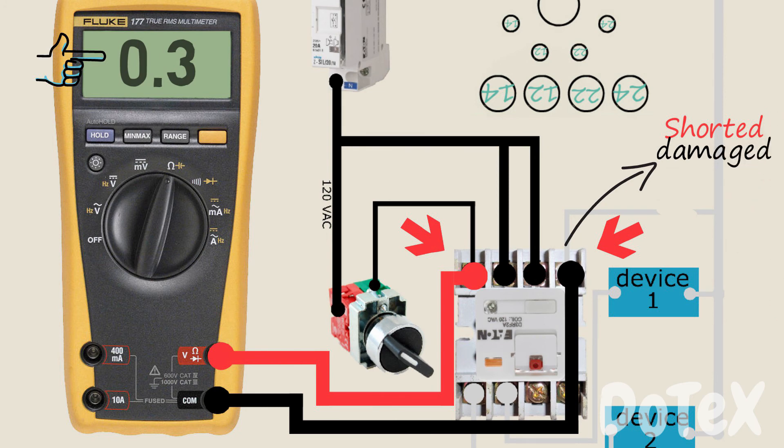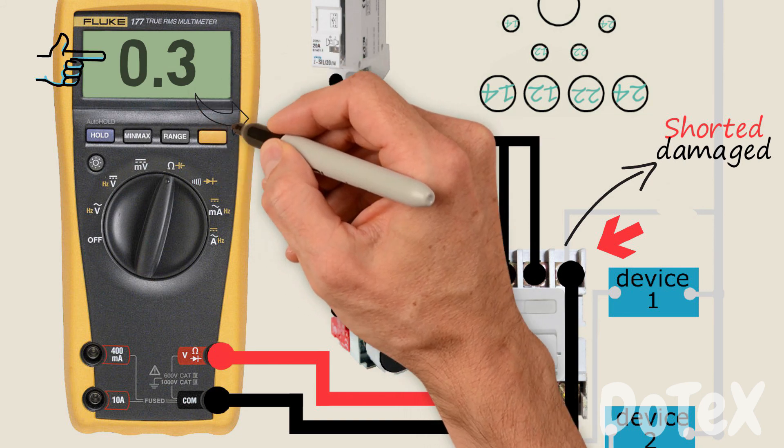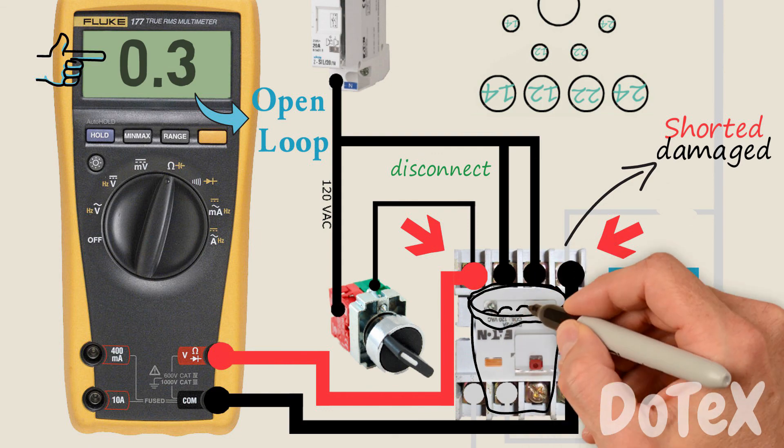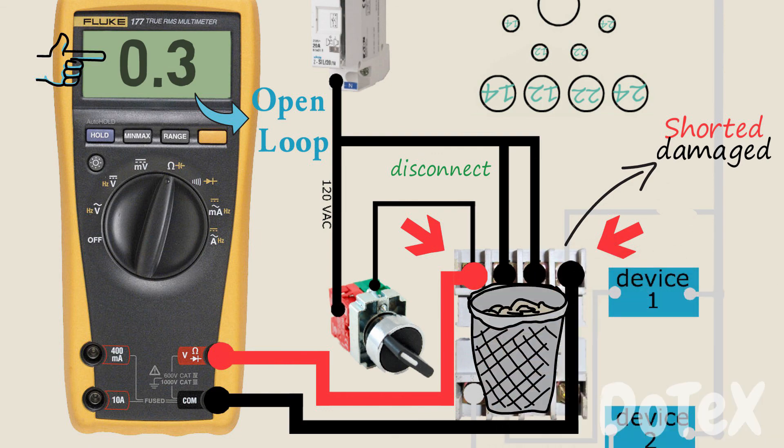And if you disconnect this relay from the circuit, the short circuit will go away, and the ohm meter reading will be open loop. So now we need to replace this relay to fix this problem.